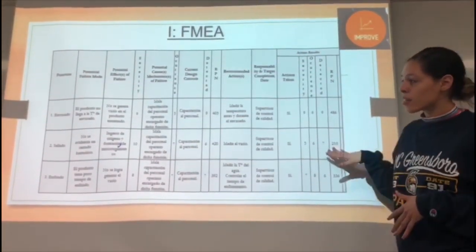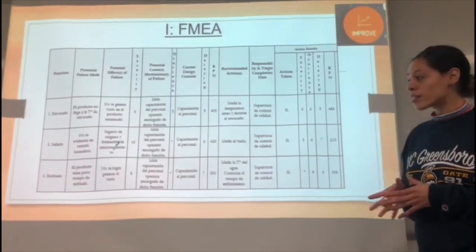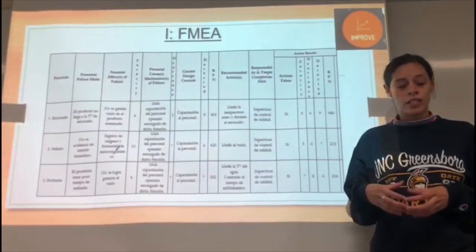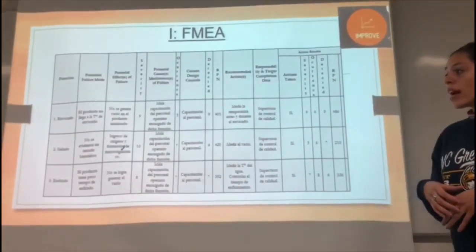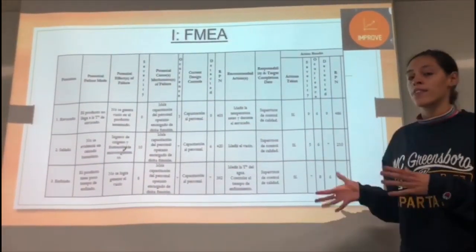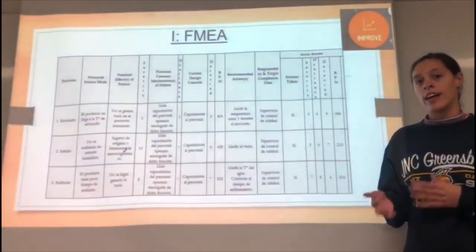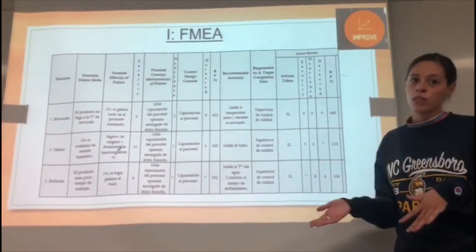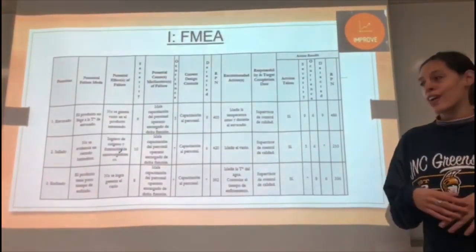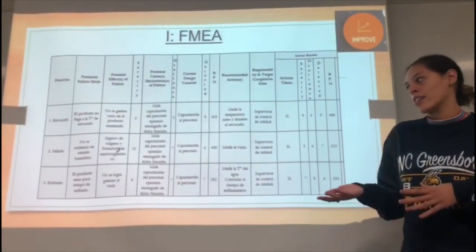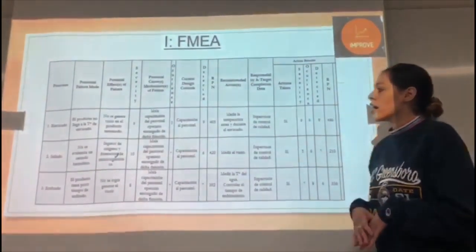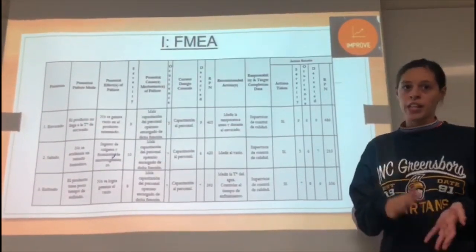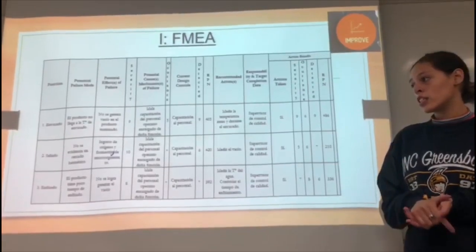The second area is the sealing of the jars. The failure mode is that the jar is not sealed correctly. The potential effect of this failure is that improper sealing allows oxygen and microorganisms to enter the jar, which causes growth of bacteria that is harmful to the public and to the company's image. The potential cause is again improper training or knowledge of the processes and machines.